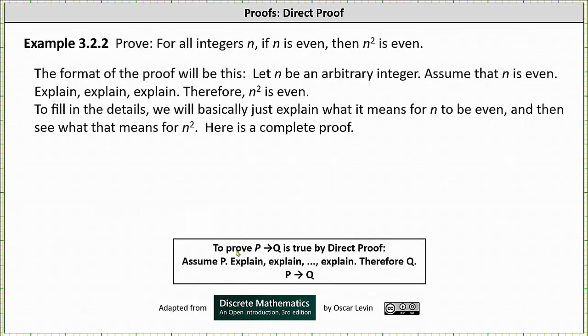Let's prove for all integers n, if n is even then n² is even. The format of the proof will be this: Let n be an arbitrary integer. Assume n is even. Explain, explain, explain. Therefore n² is even.